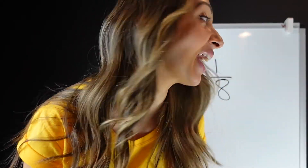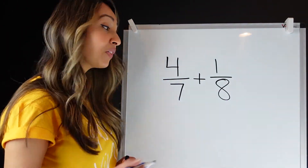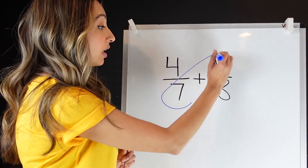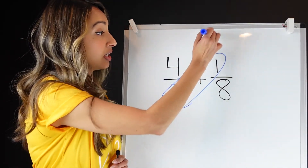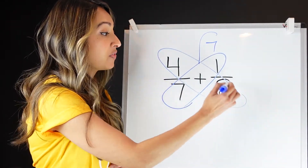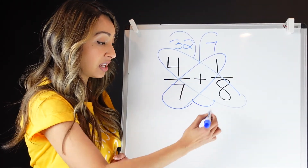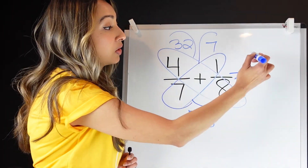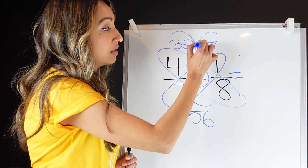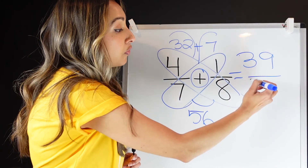Ready to try the Butterfly Method on your own? Pause the video and try this out. So if I draw my first wing and multiply across — 1 times 7 is 7. And 8 times 4 is 32. Then I do the bottom: 7 times 8 is 56. If I rewrite that, I'm adding the numerators: that equals 39 over 56.